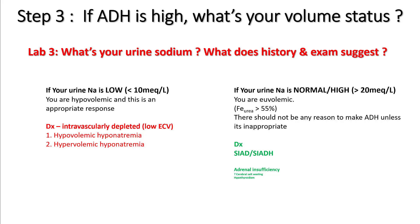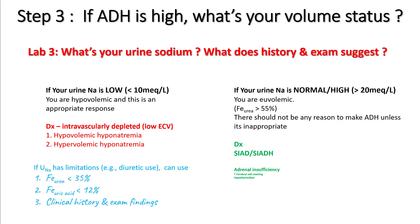High urine sodium is also seen in adrenal insufficiency, hypothyroidism, and cerebral salt wasting. One thing to note is that urine sodium has its limitations — for example, with diuretic use — so you can use other lab tests like FE urea or FE uric acid to figure this out.